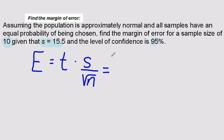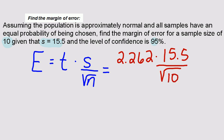So I'm going to take my 2.262 times the standard deviation, divided by the square root of 10. My calculator tells me that the numerator would be 35.061 divided by the square root of 10.